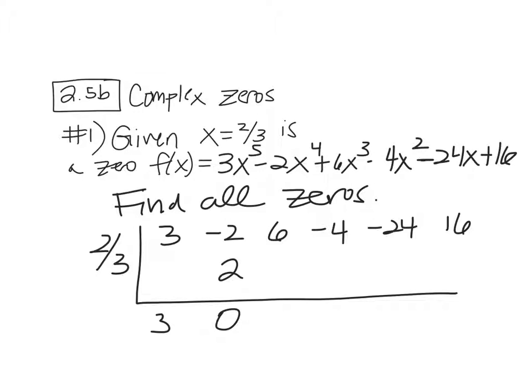Zero times two-thirds is zero. Add it up, 6. Two-thirds of 6, 4. Zero again.